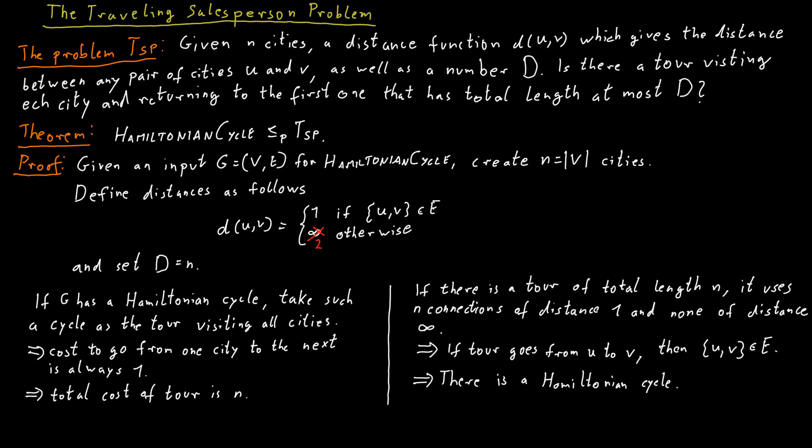It's easy to check that the reduction still works with these values. The advantage in some sense of using 1 and 2 as the distances between the cities and avoiding these very large distances is that now what we constructed satisfies the triangle inequality.